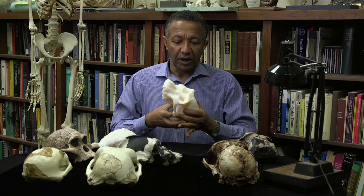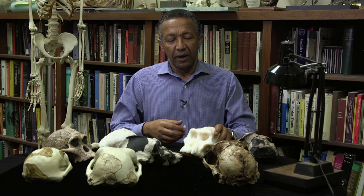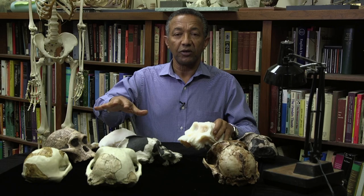Australopithecus afarensis showed up somewhere around 3.9 million years ago, or maybe slightly earlier, but the key point here is that afarensis overlapped in time with Australopithecus anamensis. That changed the whole mode of evolution of Australopithecus anamensis and Australopithecus afarensis. So now what we know is that anamensis was probably the ancestor of Australopithecus afarensis, but their relationship was not linear.